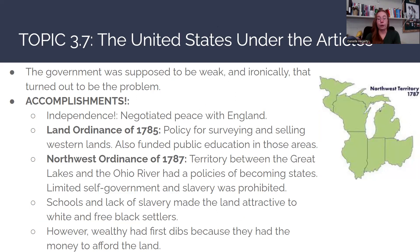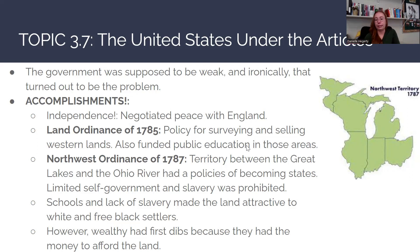The first accomplishment is independence. The United States government under the Articles of Confederation negotiated peace with England and declared independence formally through the Treaty of Paris. The second accomplishment is the Land Ordinance of 1785 — a policy for surveying and selling western lands. It allowed them to explore and sell land to Americans to settle further west, and it also funded public education in those areas.